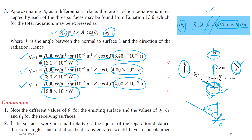Note that for different values of θ1 for the emitting surface, the values of θ2, θ3, and θ4 for the receiving surfaces differ accordingly. If the surfaces were not small relative to the square of the separation distance, the solid angles and radiation heat transfer rates would have to be obtained by integration.